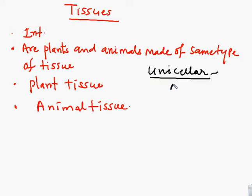Examples of unicellular organisms include amoeba, paramecium, etc. In unicellular organisms, all the life processes like nutrition and respiration are carried out by the single cell.